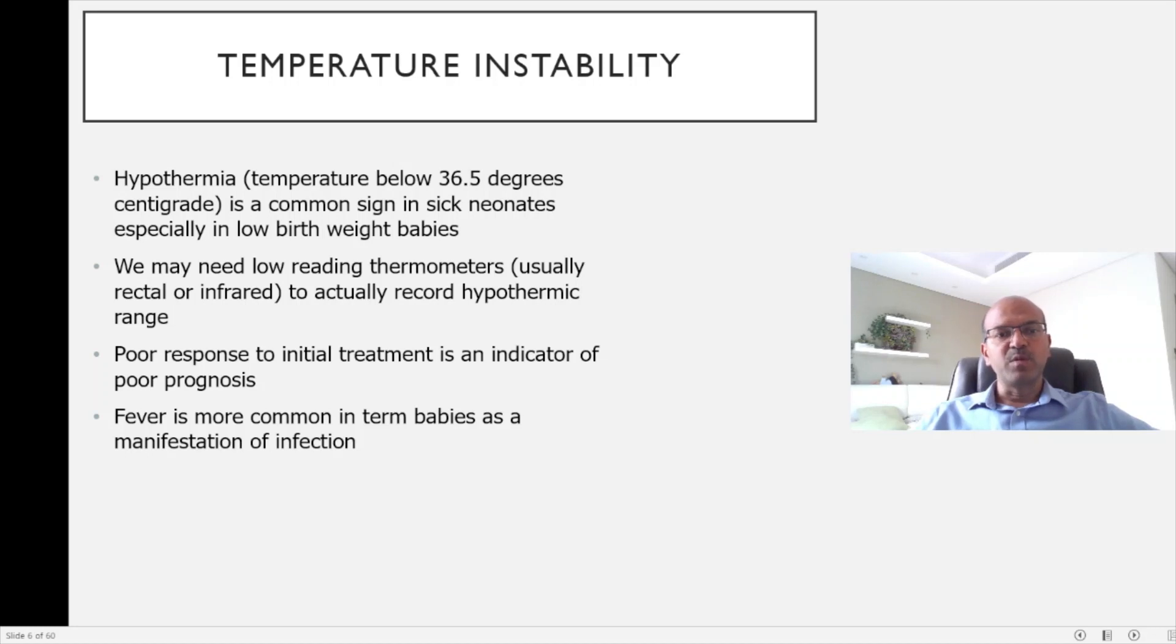Their ability to maintain body temperature is limited. Their source of brown fat is less, their body surface area is relatively more, and their posture is one of extension, especially in small babies when they are sick and hypotonic, causing temperature to drop quickly.